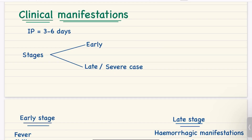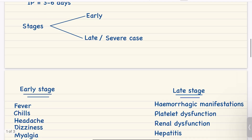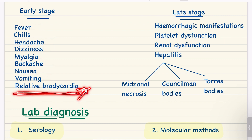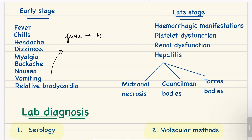The incubation period for yellow fever is three to six days. We have two stages: early stage and late stage. In the early stage, we can see fever, chills, headache, dizziness, myalgia, backache, nausea, vomiting, and relative bradycardia. Relative bradycardia means that normally with fever the heart rate increases, but in this case heart rate decreases with fever. This is also known as Faget's sign.